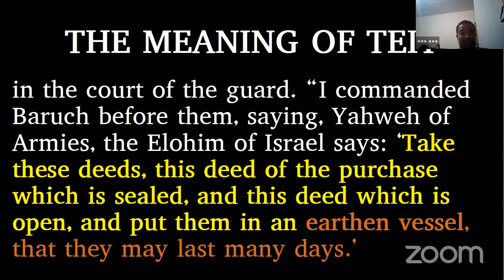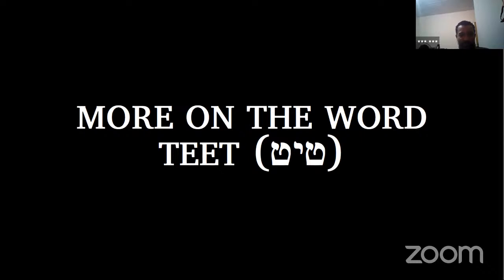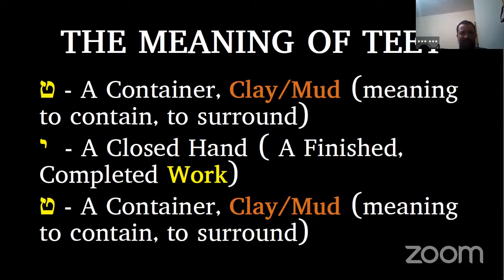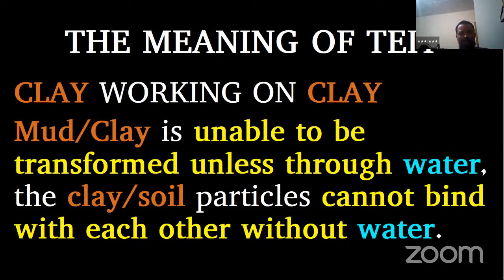The word Teit comes from that root word Teit meaning mud or clay. If you look at the individual symbols of the word Teit, you get: the Teit itself meaning a container, clay vessel, to surround; the Yod, a hand meaning work — to complete a work; and another Teit. Together they convey clay working on clay, which is what clay is — it is literally binding to clay. But mud or clay is unable to be transformed unless through water. Clay dirt cannot be used to mold or shape anything unless you add water.